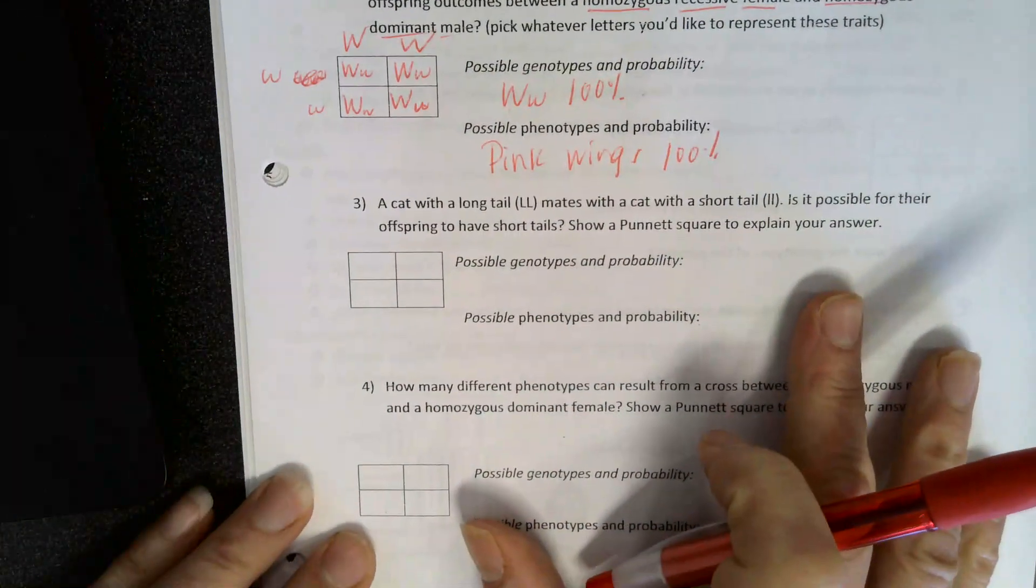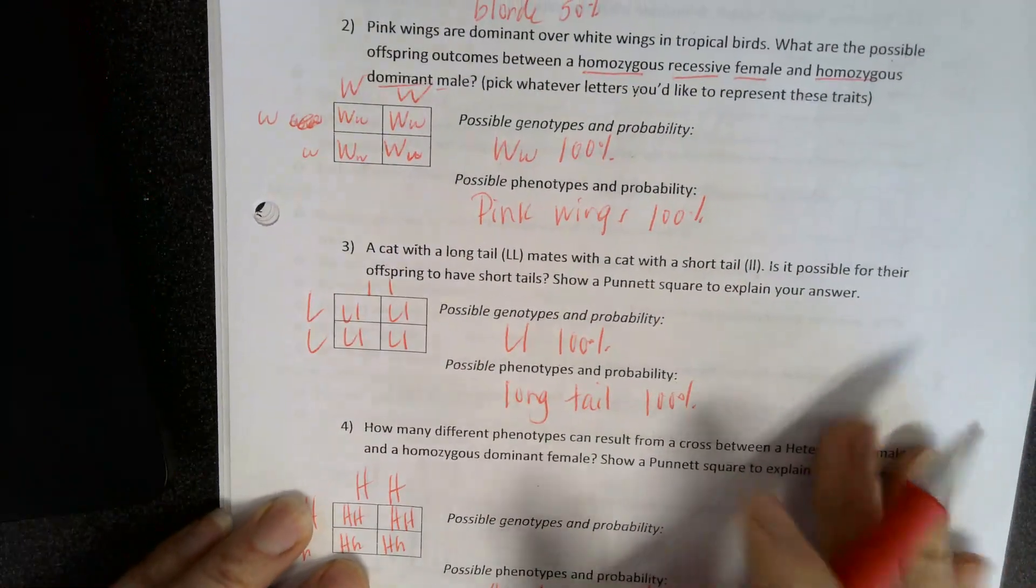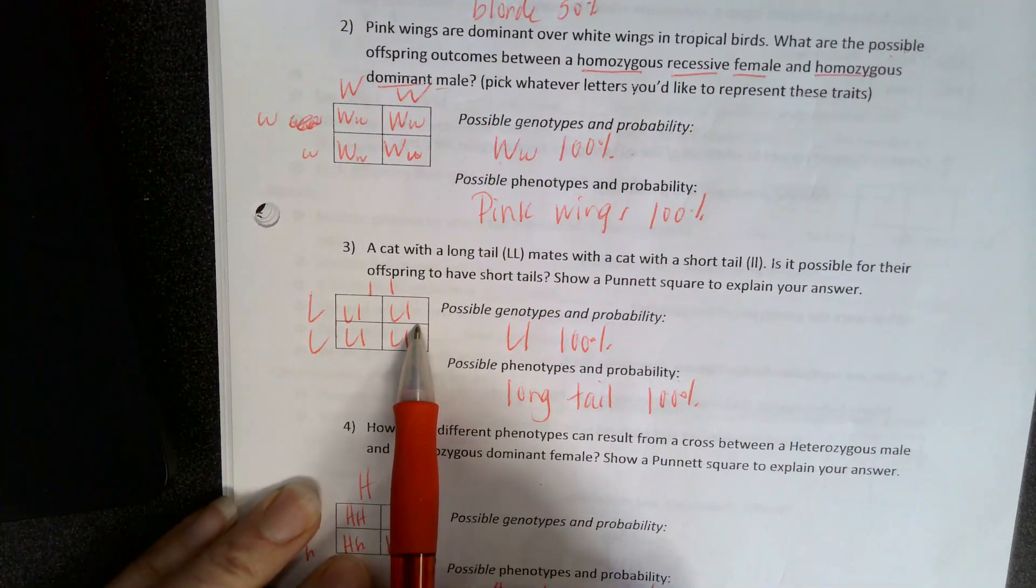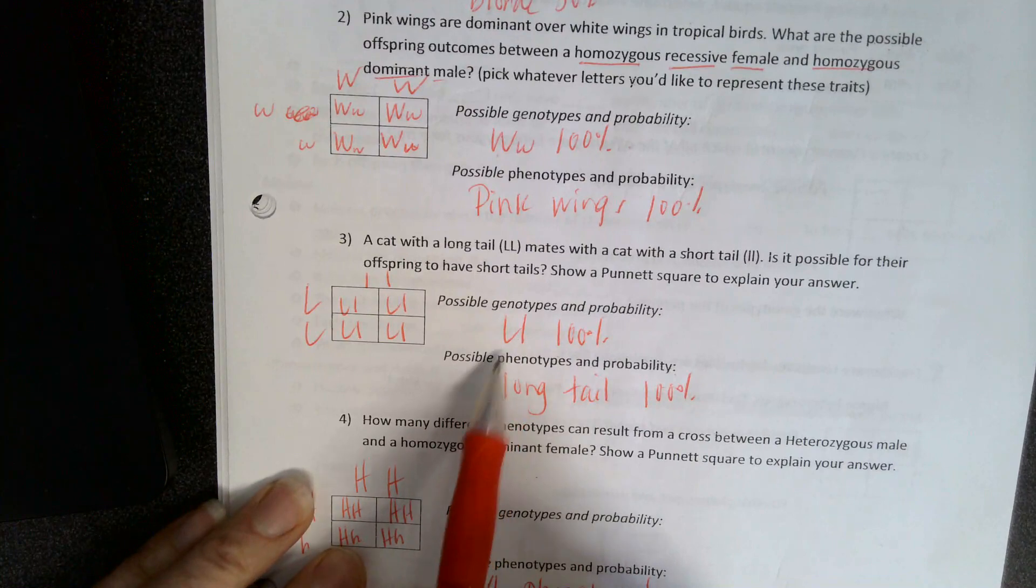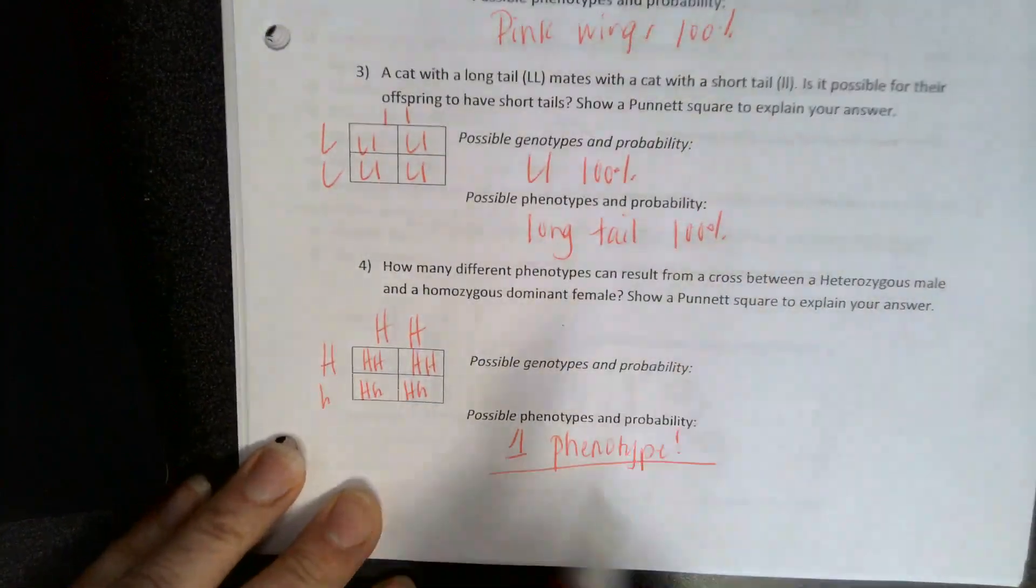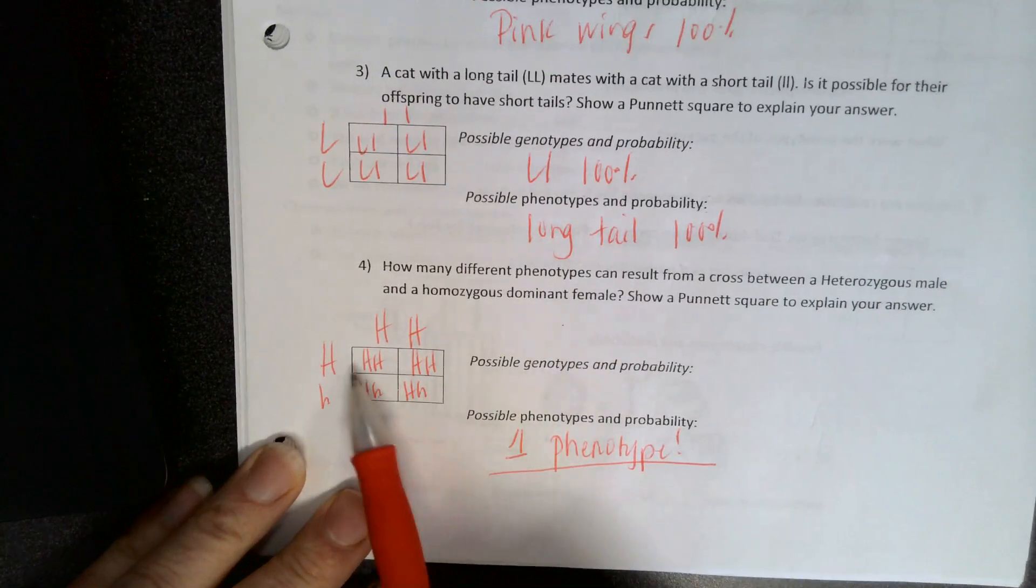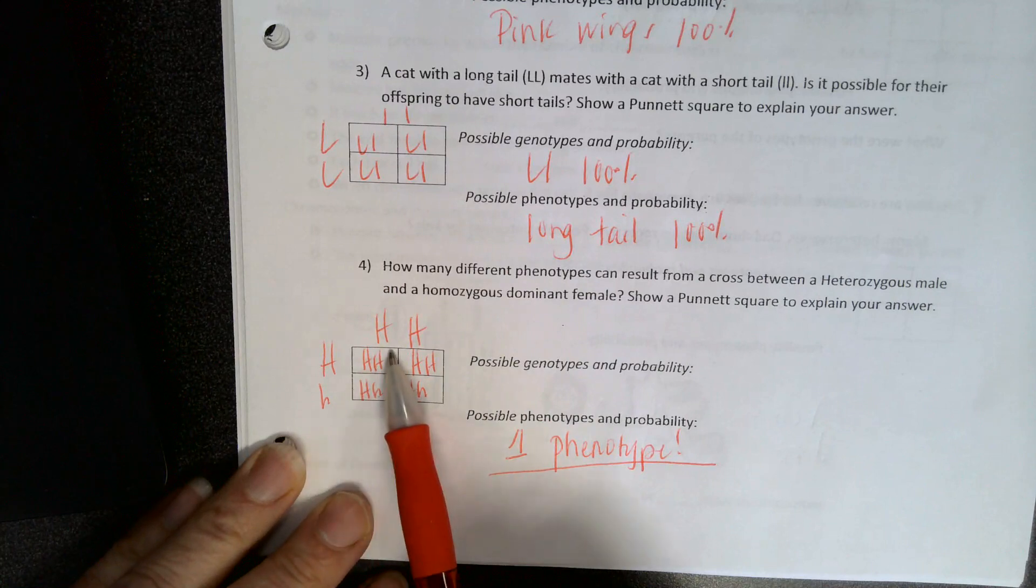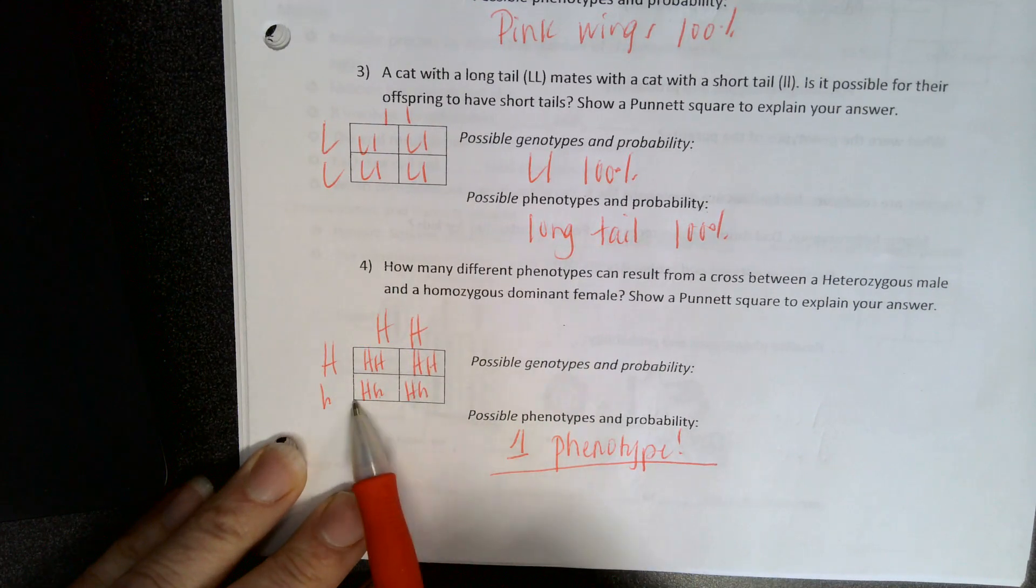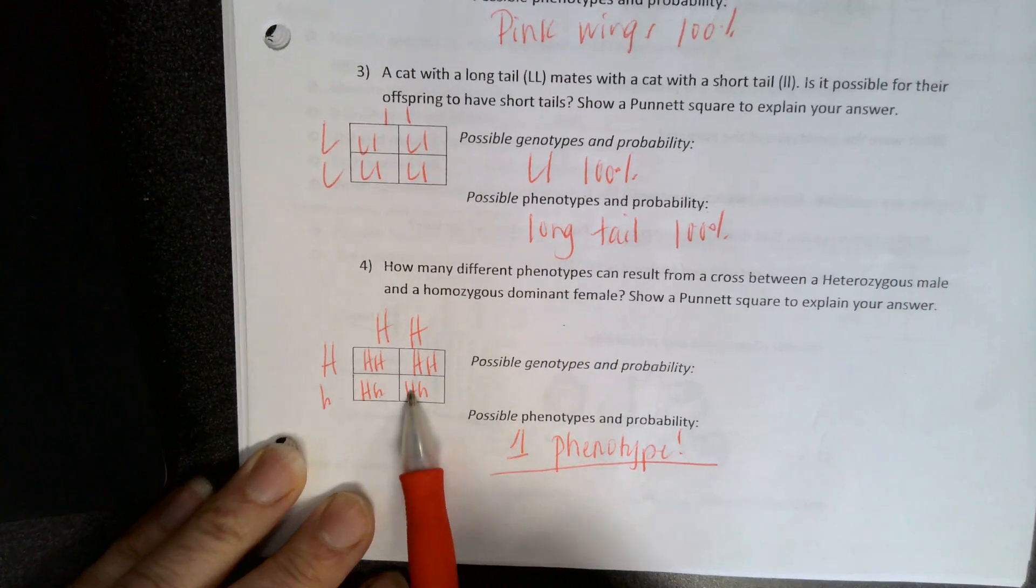Pink wings. All right, let's try three and four. Okay, so for number three, pretty straightforward with the long-tailed, short-tailed cats. It's going to be 100% big L, little L, which is 100% long-tailed. How many different phenotypes can result from a cross between a heterozygous male and a homozygous dominant female? Here's my heterozygous male. Here's my homozygous dominant. Notice that every single possible outcome in the offspring contain at least one dominant trait, so there's one phenotype, which means they're all going to look the same.